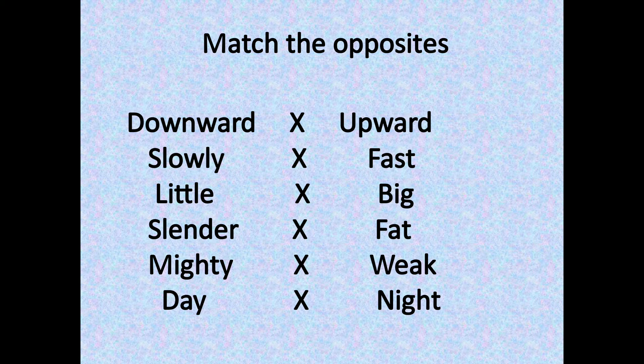Question number 6: Match the opposites. Downwards — opposite is upward. Slowly — opposite is fast. Little — opposite is big. Slender (we have already discussed that slender means very thin) — opposite is fat. 'My team is very powerful' — opposite is weak. Day — opposite is night.